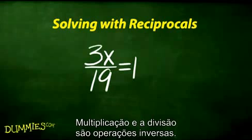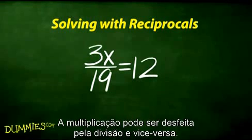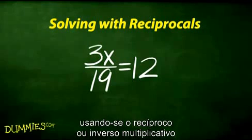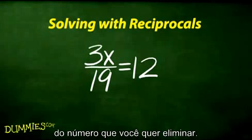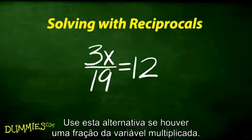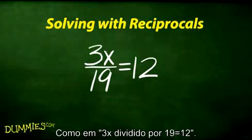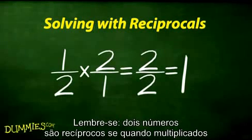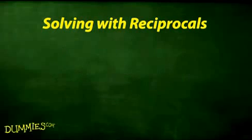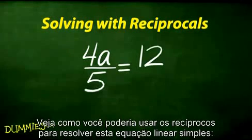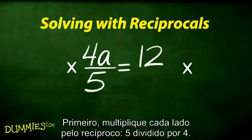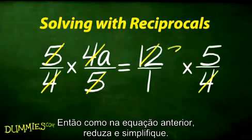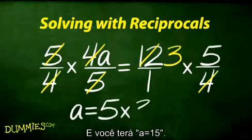Multiplication and division are opposite operations — multiplication is undone by division and vice versa. Another option is using the reciprocal, or multiplicative inverse, of the number you're trying to get rid of. Choose this alternative if a fraction is multiplying the variable, as in 3x over 19 equals 12. Two numbers are reciprocals if multiplying them yields a product of 1. Multiply each side by the reciprocal — 5 fourths — then reduce and simplify to get a equals 15.